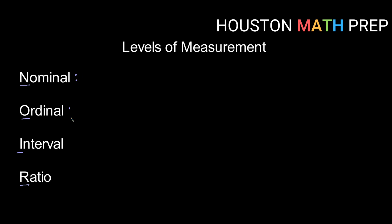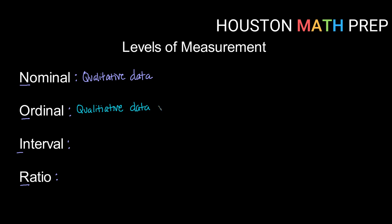The levels of measurement add on to one another. We start with the first level which is nominal. Nominal is for qualitative data, and nominal data is simply categories. In nominal data we can't do anything with the data in terms of putting it in order — it is strictly categories. When we move up to the second level, ordinal, this one is also for qualitative data, and it has all the qualities of nominal data but now we can place it in order.